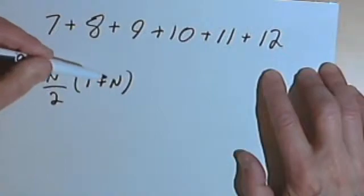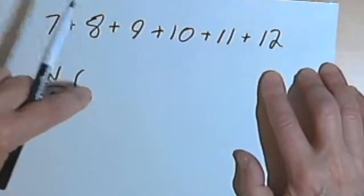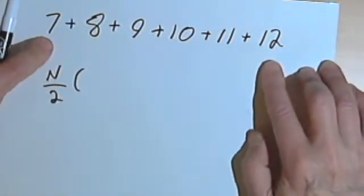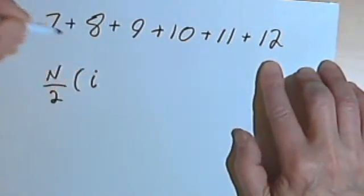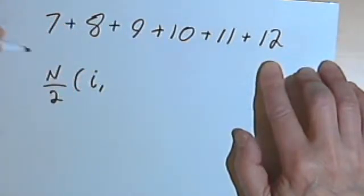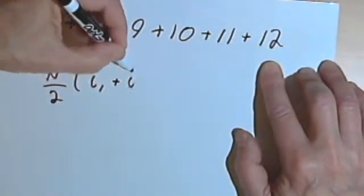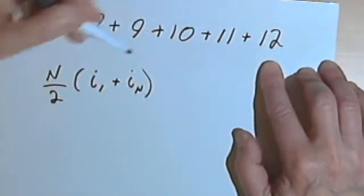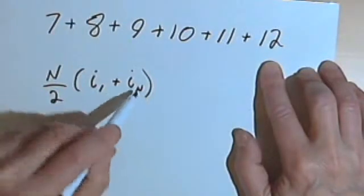I'm going to have to change this formula slightly. Instead of saying 1 plus n, what I want to do now is have a formula that adds the first term and the last term, in this case the 7 and the 12. So I'm going to use i as the letter I use for the term, and the first term I'll call i sub 1. And the last term I'm going to call i sub n because, well, in this case there are 6 terms, so i sub n would be i sub 6. So the n will still work here as a subscript.